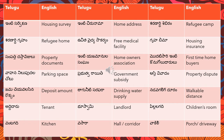'Saranarthi sibiro' means refugee camp — 'saranarthi' means refugee and 'sibiro' means camp. There's also 'saranarthi groho', where 'groho' means home. Both involve refugees.